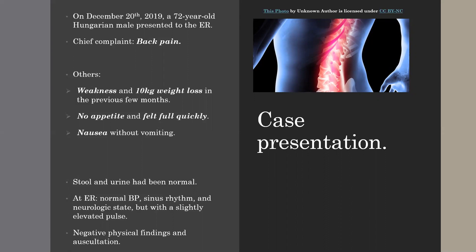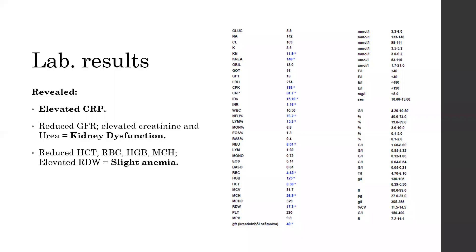Stool and urine had been normal. Everything else had been normal except a slightly elevated pulse. Lab results revealed elevated CRP, kidney dysfunction, and slight anemia.